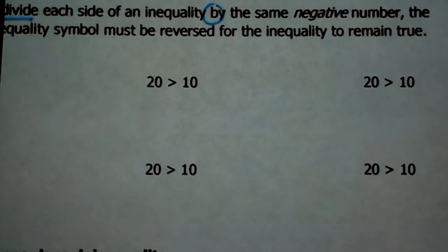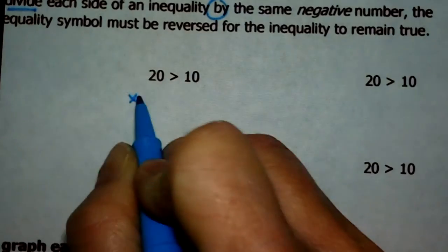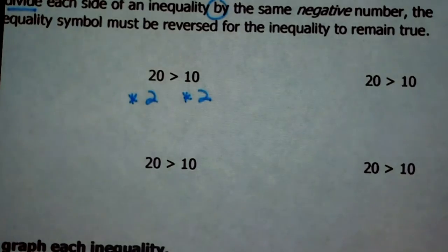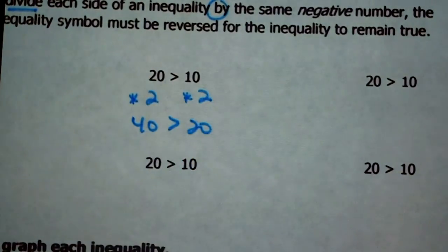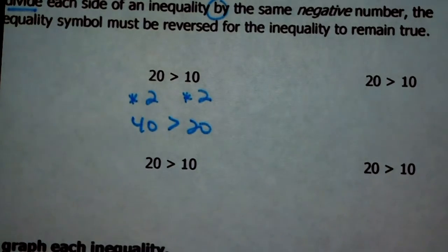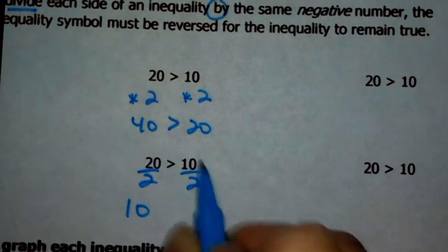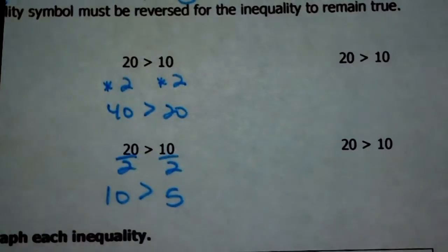What if you multiply by a positive number? If you multiply by 2 on each side, 20 times 2 is 40, 10 times 2 is 20. Is 40 still greater than 20? Yeah, so multiplying the same positive number to each side doesn't change the statement. If you divided each side by a positive 2: 20 divided by 2 is 10, 10 divided by 2 is 5. 10 is still greater than 5. So nothing's changed about what you learned before.